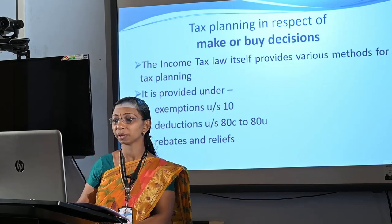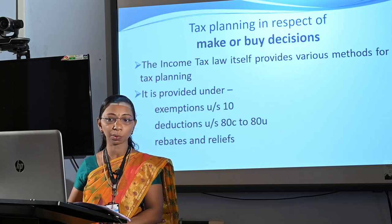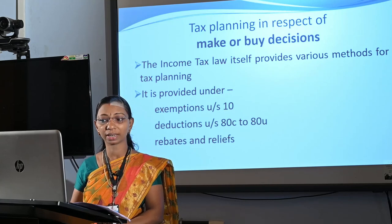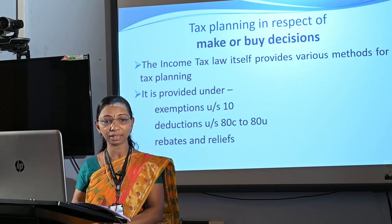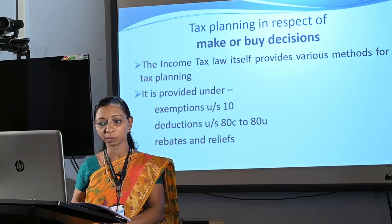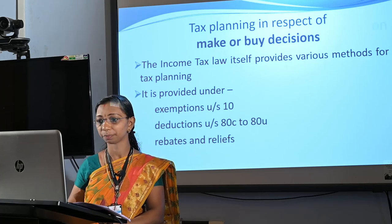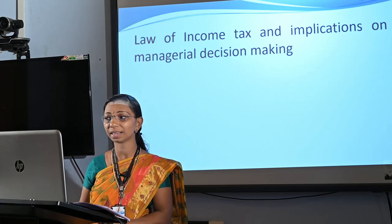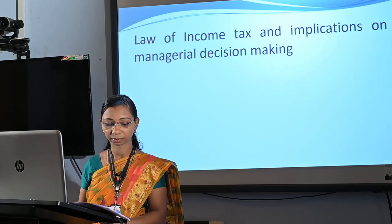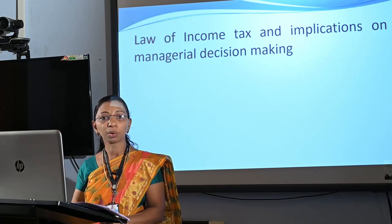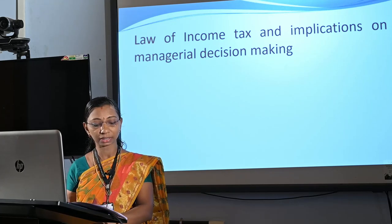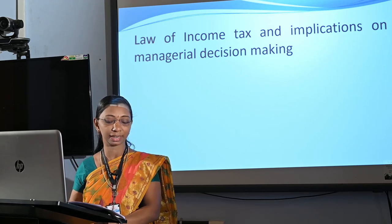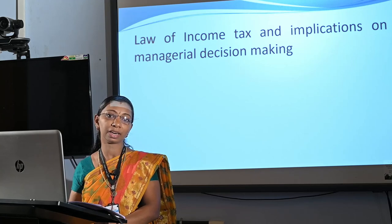Tax planning in respect of make or buy decisions. The income tax law itself provides various methods of tax planning, generally provided under exemptions under Section 10, deductions under Section 80C to 80U, and rebates and reliefs. Sometimes an organization wants to take decisions whether a certain product should be manufactured by the factory itself or bought from an outside firm.